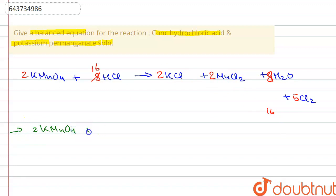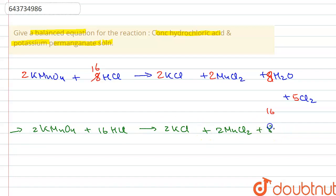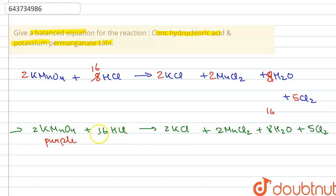The balanced equation is: 2 KMnO4 + 16 HCl → 2 KCl + 2 MnCl2 + 8 H2O + 5 Cl2. That is 2 moles of potassium permanganate reacting with 16 moles of HCl to give 2 moles of potassium chloride, 2 moles of manganese chloride, 8 moles of water, and 5 moles of chlorine gas.